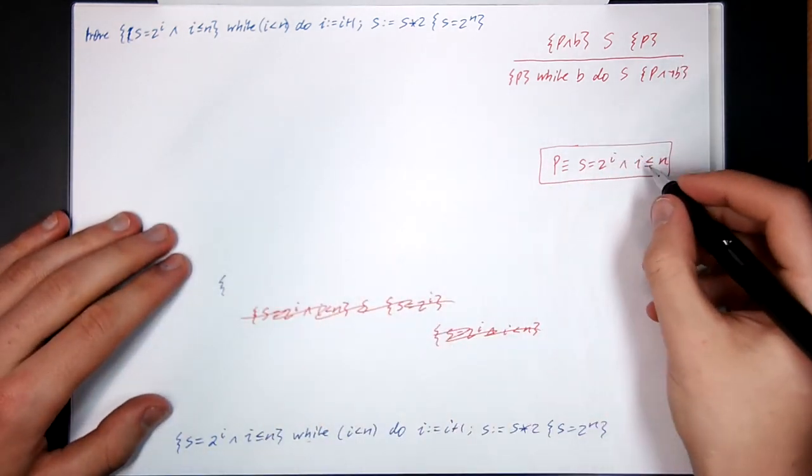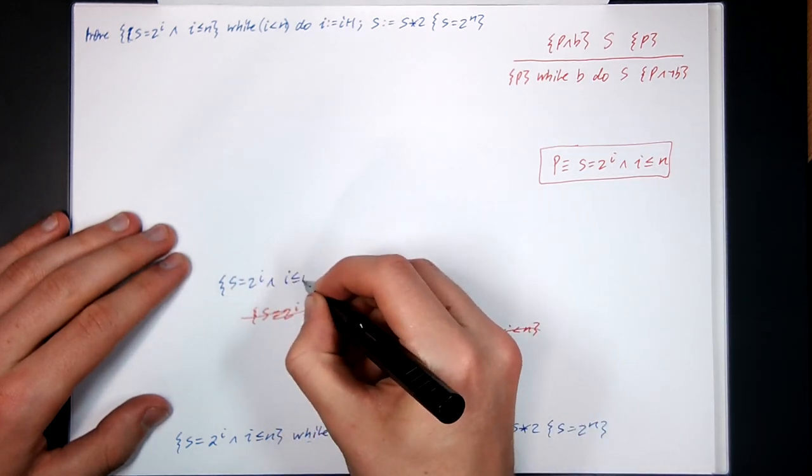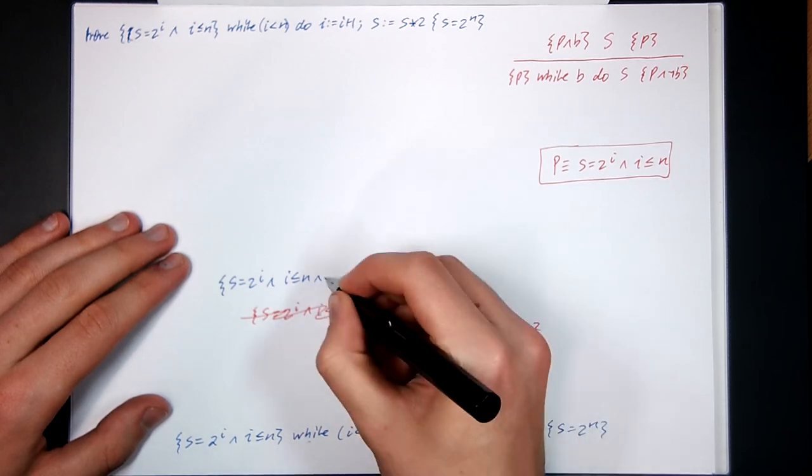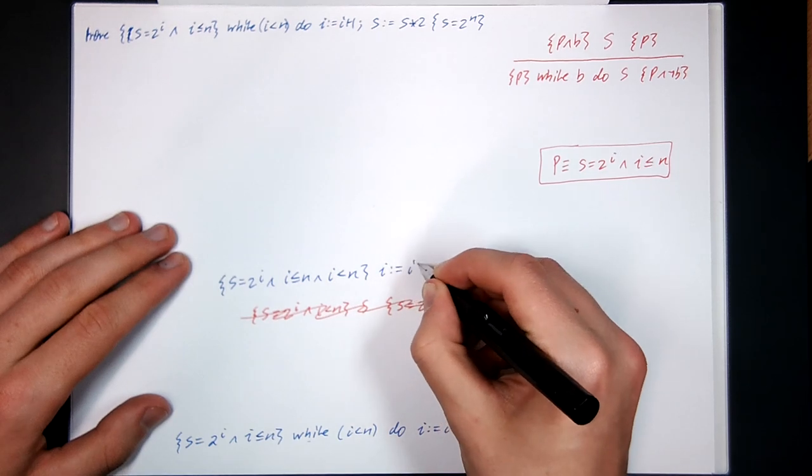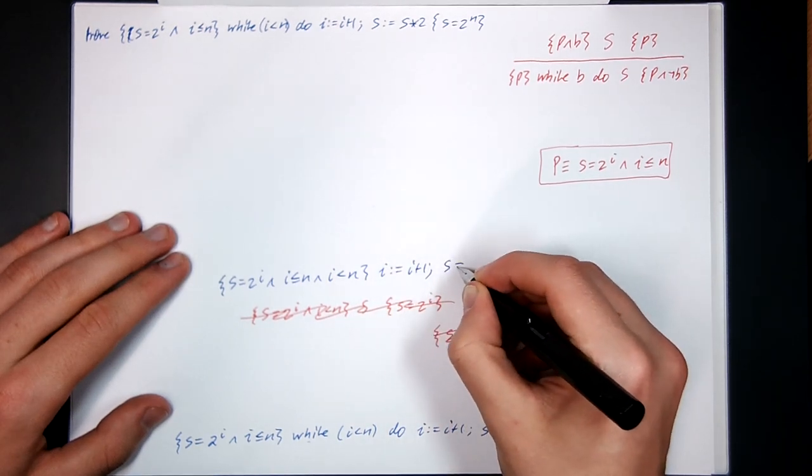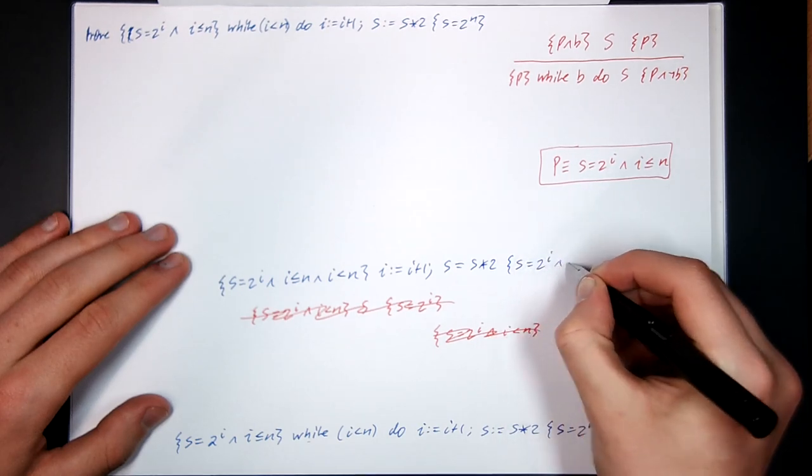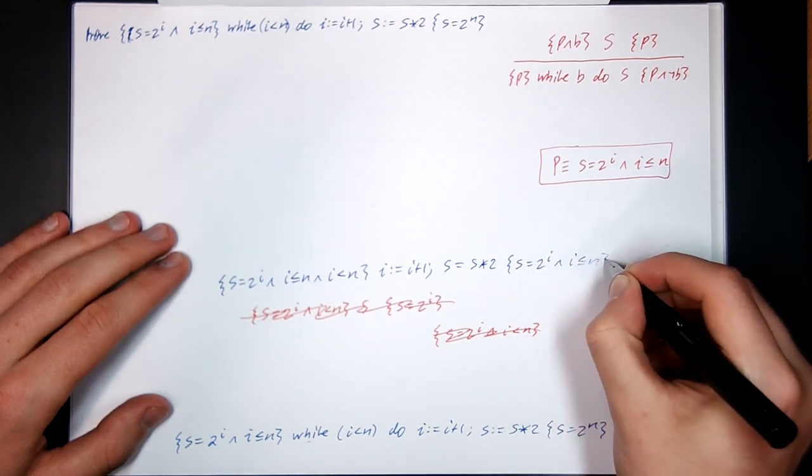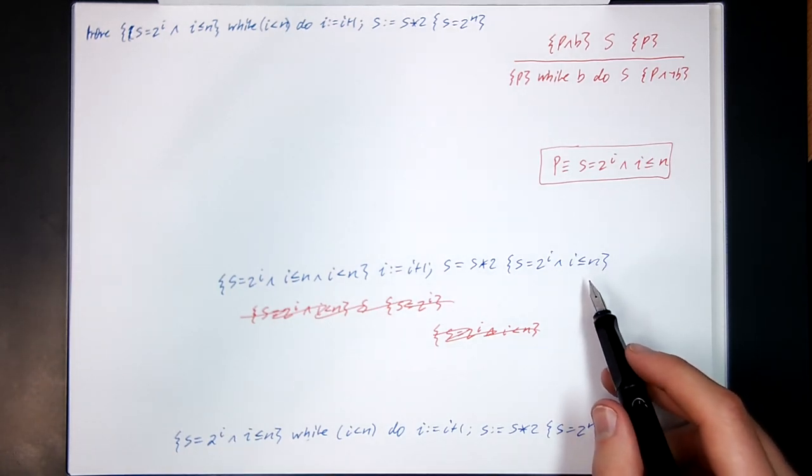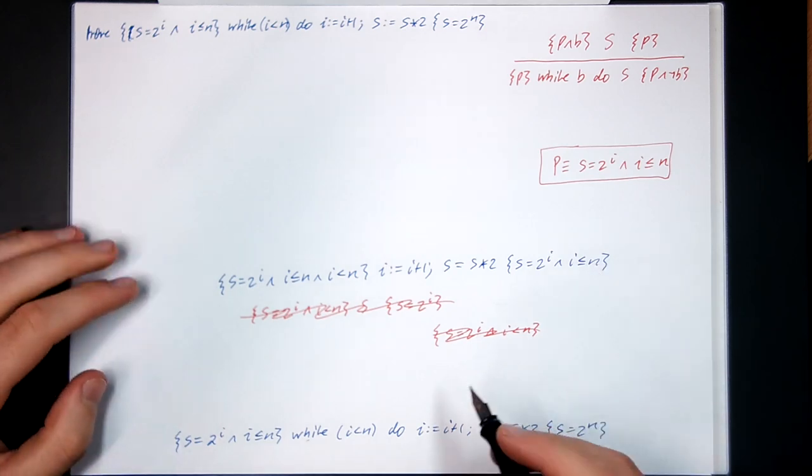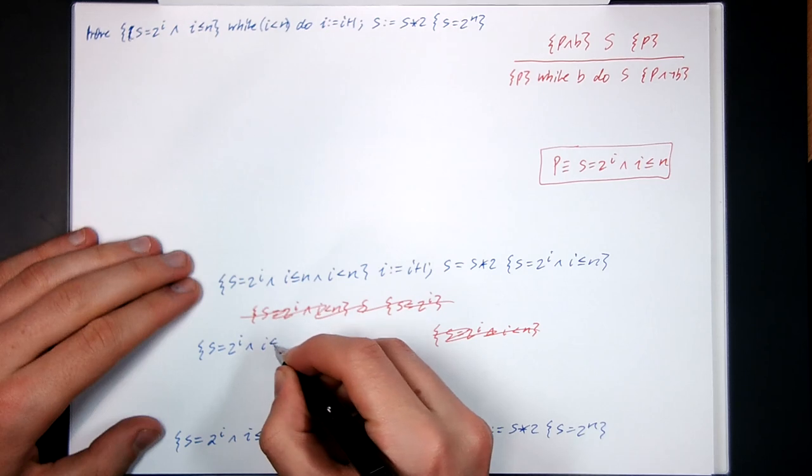So let me just write out P and B. So S equals 2 to the I and I less than or equal to N and B I strictly less than N the code S, I plus 1, S equals S times 2 and the post condition P. So if this is true and I do the while rule forward on this, we're going to get S equals 2 to the I and I less than or equal to N.